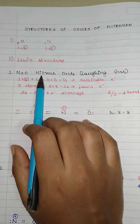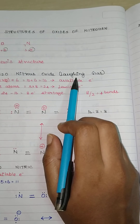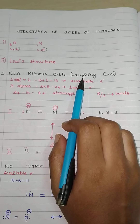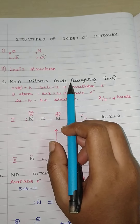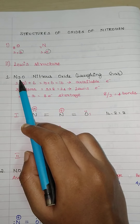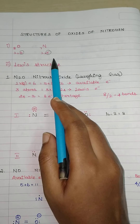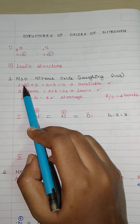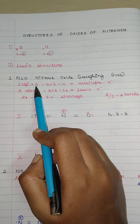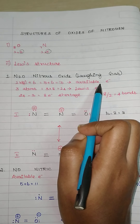So first we have nitrous oxide, which is N2O. This nitrous oxide is otherwise also called as laughing gas. First we need to calculate the total number of available electrons. We have 2 nitrogen here — for 1 nitrogen the valence electron is 5, so for 2 nitrogen it will be 2 into 5, plus for 1 oxygen it is 6. So 10 plus 6 will be 16 electrons as your available electrons.